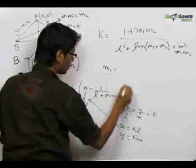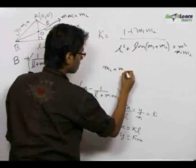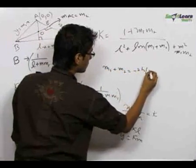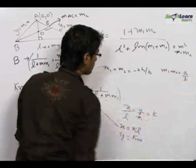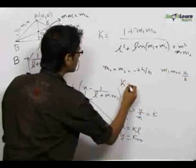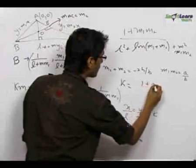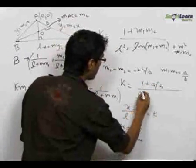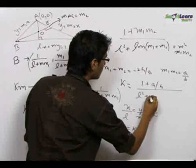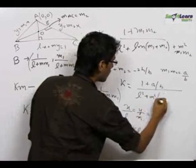We know that m1 plus m2 equals minus 2H upon B and m1m2 equals A upon B. So we get the value of K as 1 plus A upon B divided by L square plus M square times A upon B plus LM times minus 2H upon B.